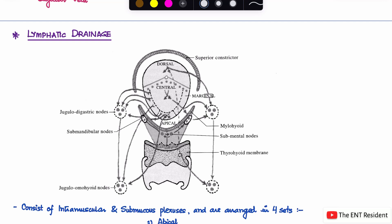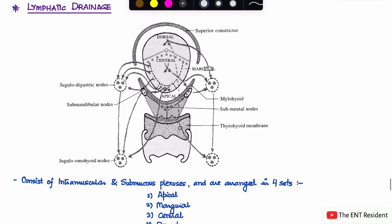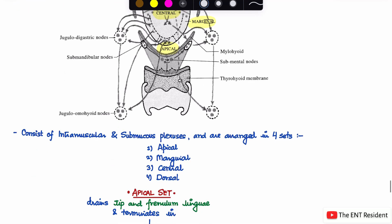The lymphatics consist of intramuscular and submucosal plexus, and they get arranged in four sets. As you can see, there is the apical drainage, the marginal drainage, the dorsal drainage, and the central drainage. These are the four groups of drainage of the tongue, and we'll talk about each group. The first group is the apical set.